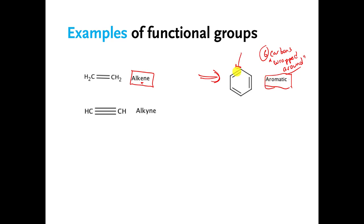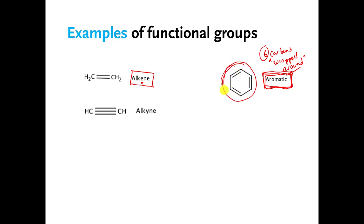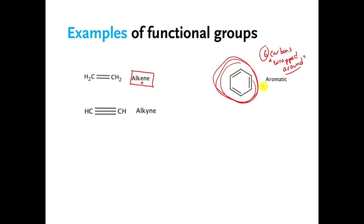This is the simplest molecule with an aromatic functional group. If you've ever heard the word aromatic before, it means something that has a certain odor. Around 150 years ago, chemists were making molecules with this particular pattern, and all the molecules they made had certain smells, so they called it an aromatic functional group. It turns out they were wrong — there are many molecules with this pattern that don't have any smell at all — but the name stuck.